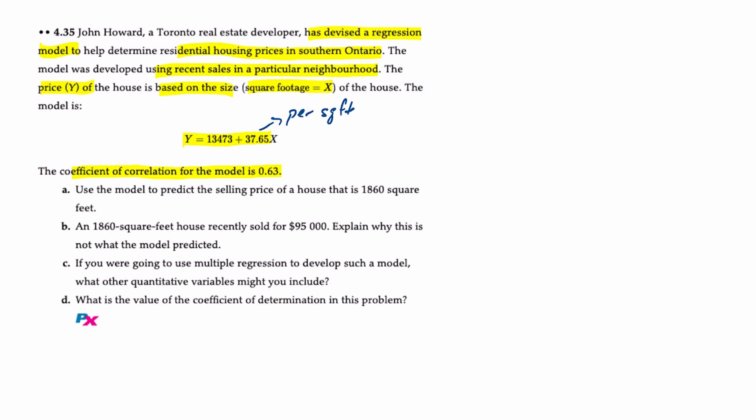We're also told that the coefficient of correlation, also known as the correlation coefficient, is 0.63. That is actually r or R, depending on whether you have a text or source that uses a big R or small r.